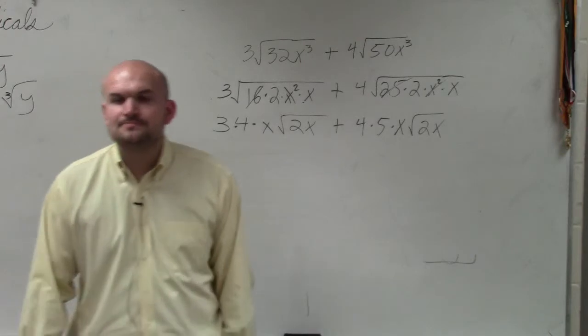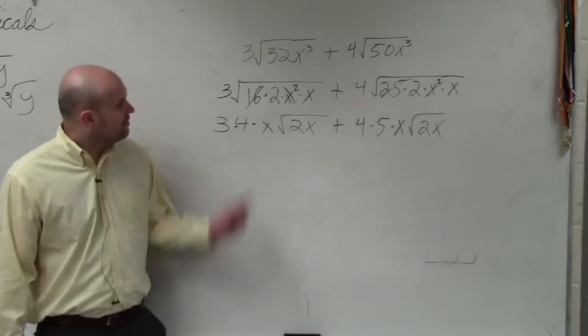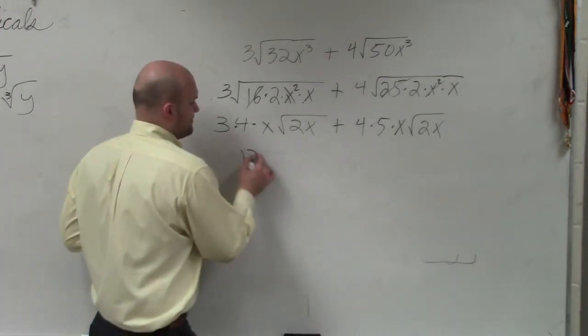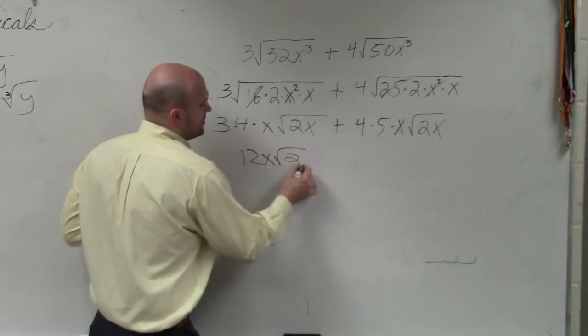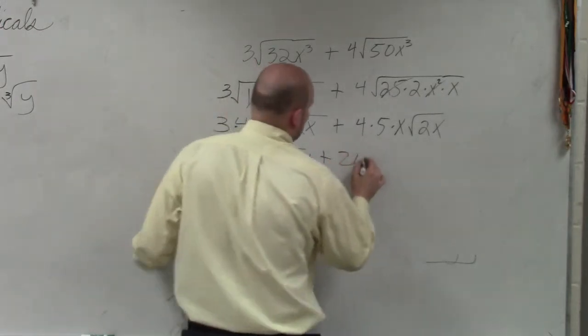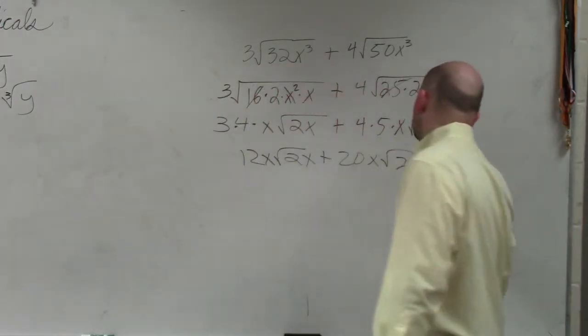Does everybody see that? Yeah, okay. 3 times 4 is 12x times the square root of 2x plus 20x square root of 2x.